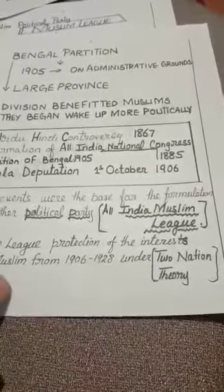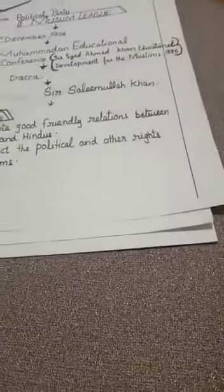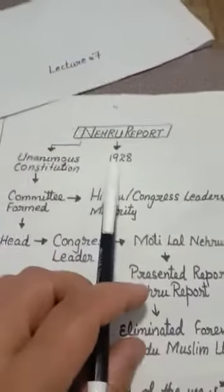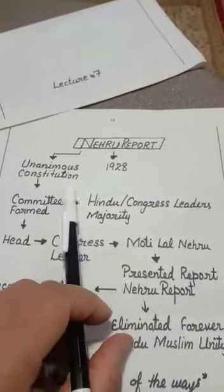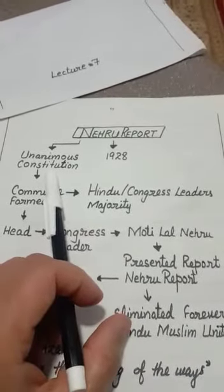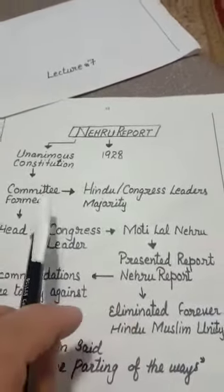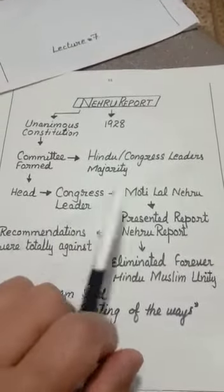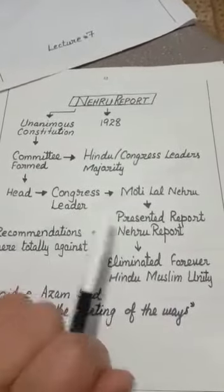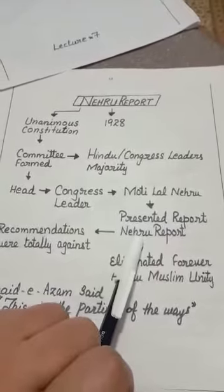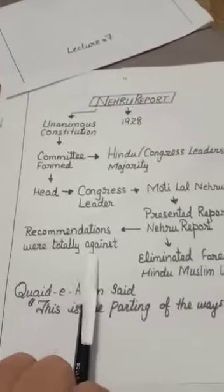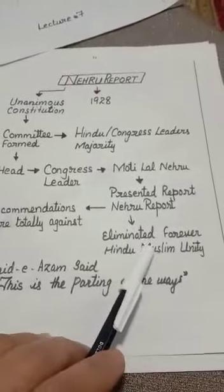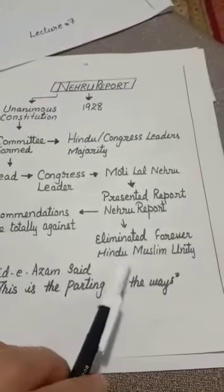The struggle shifted from the Two Nation Theory to a demand for two separate states. The reason behind this was the Nehru Report of 1928. The All Parties Conference was called to make a unanimous constitution for British India. A committee was formed in which Hindu and Congress leaders were in the majority, headed by Motilal Nehru, a Congress leader. He presented the Nehru Report, whose recommendations were totally against the interests of the Muslims, eliminating the possibility of Hindu-Muslim unity forever.